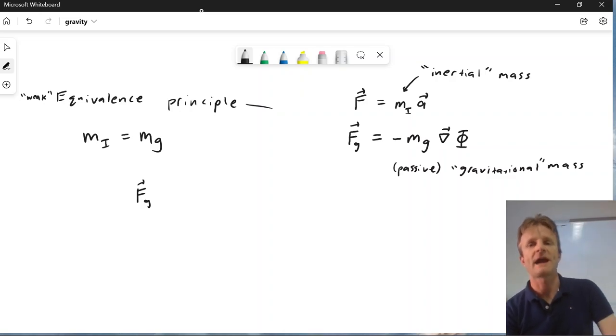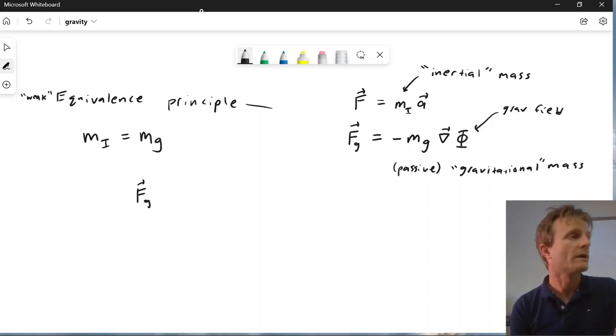If you're in the presence of an external force, how you respond to that force is the inertial mass. And this passive gravitational mass is if you're in a gravitational field due to some other body. So the gravitational field is sourced by some other body or set of bodies phi. What force do you feel? Well,